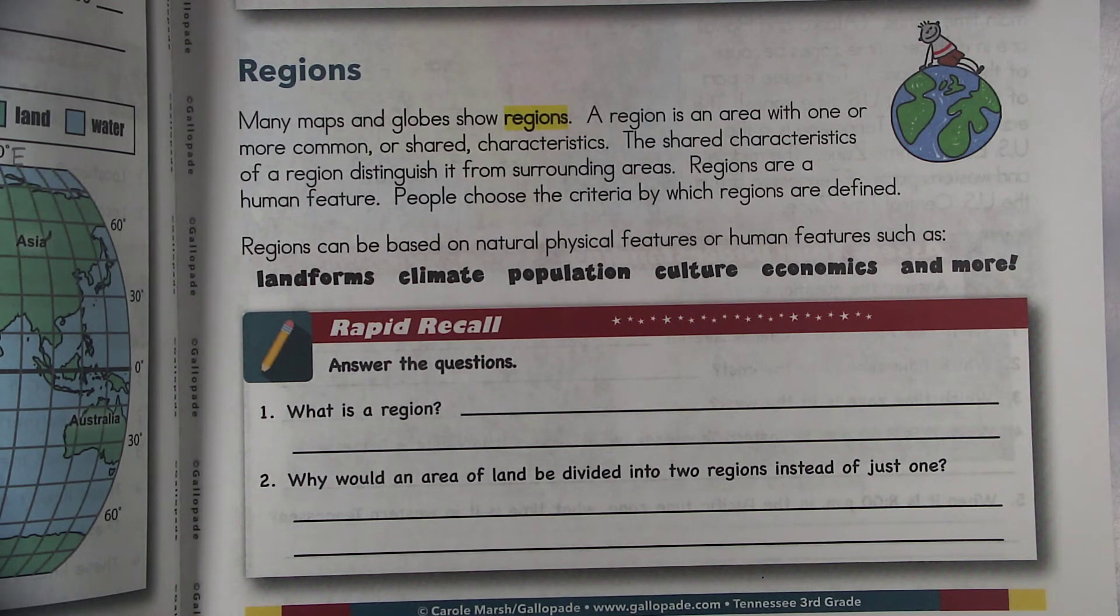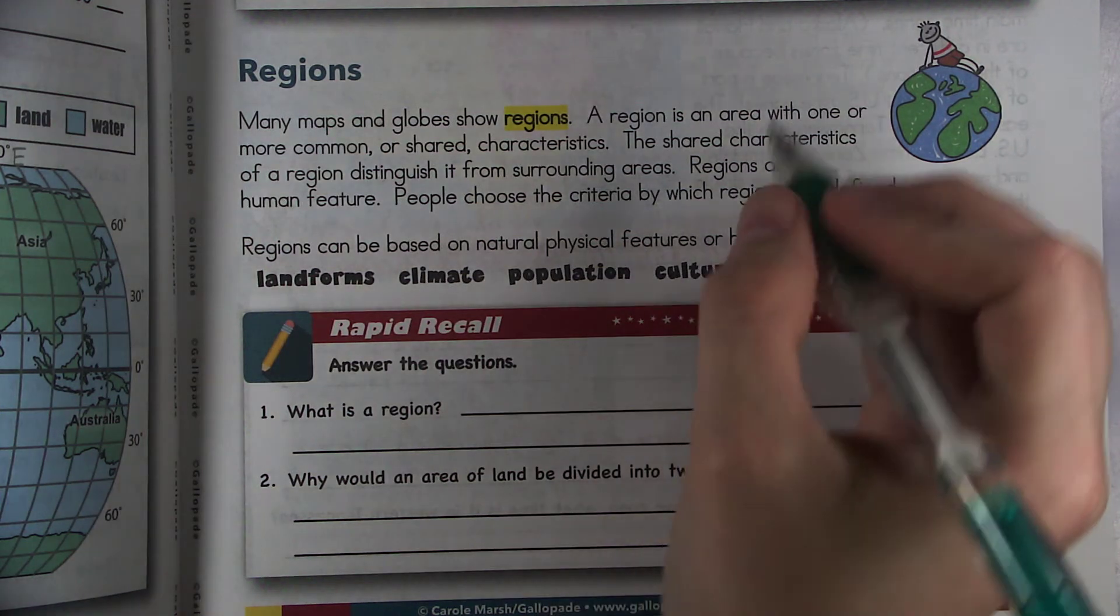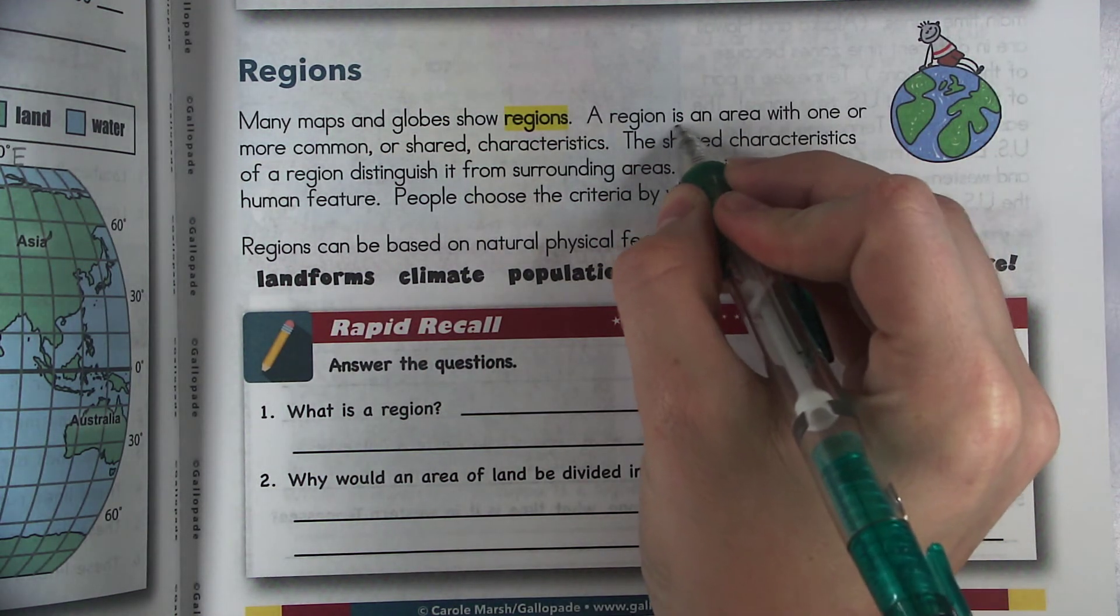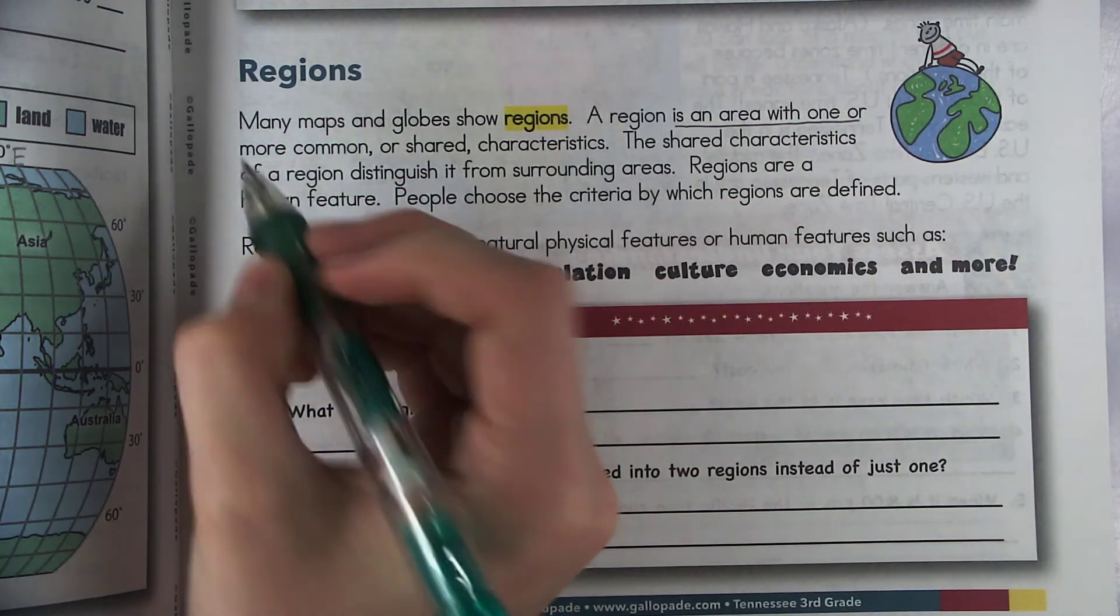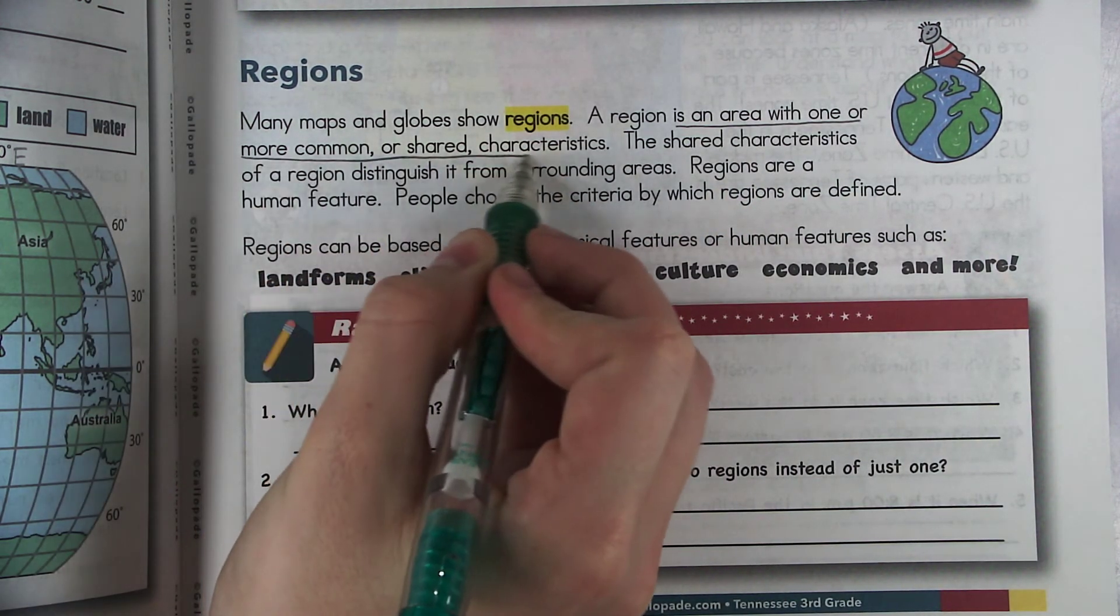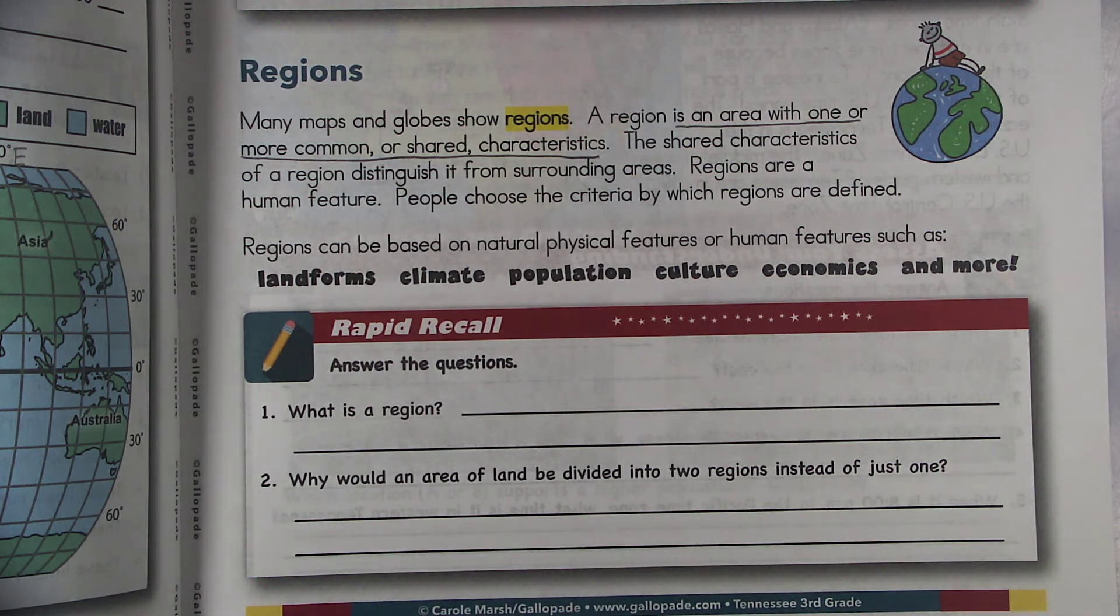Regions. So many maps and globes show regions. A region is an area with one or more common or shared characteristics. So this gives us our definition to what a region is. Go ahead and underline that. The shared characteristics of a region distinguish it from surrounding areas. Regions are a human feature. People choose the criteria by which regions are defined.